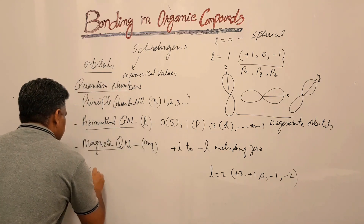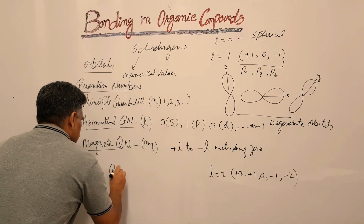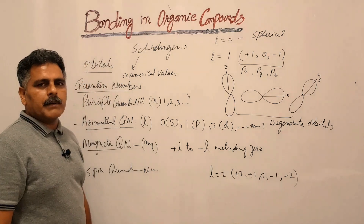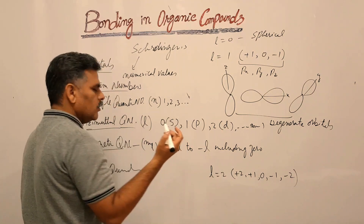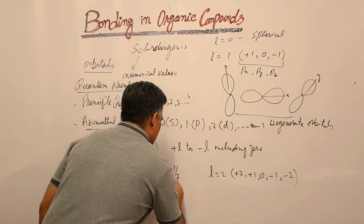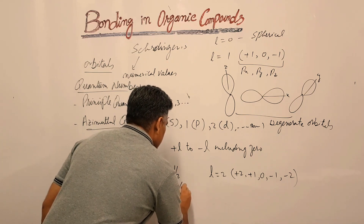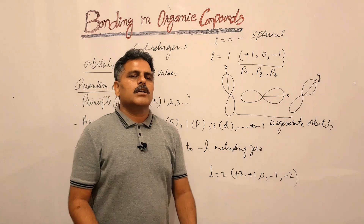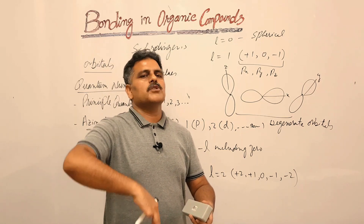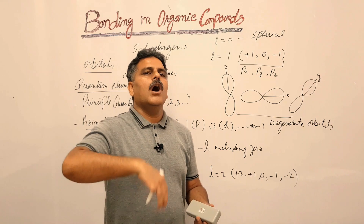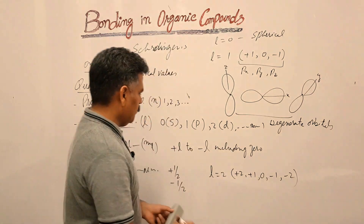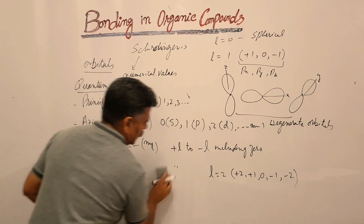The last quantum number is the spin quantum number, denoted by s. It has only two values: either plus half or minus half. This means that in any orbital, one electron's spin will be either plus half or minus half, and if there are two electrons, their spins will be opposite.